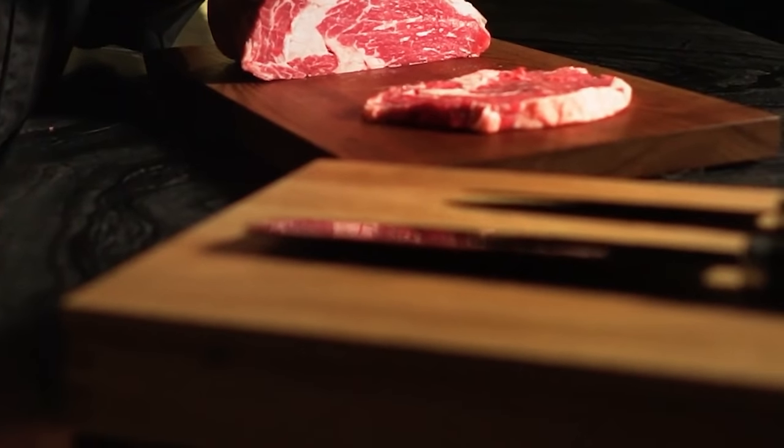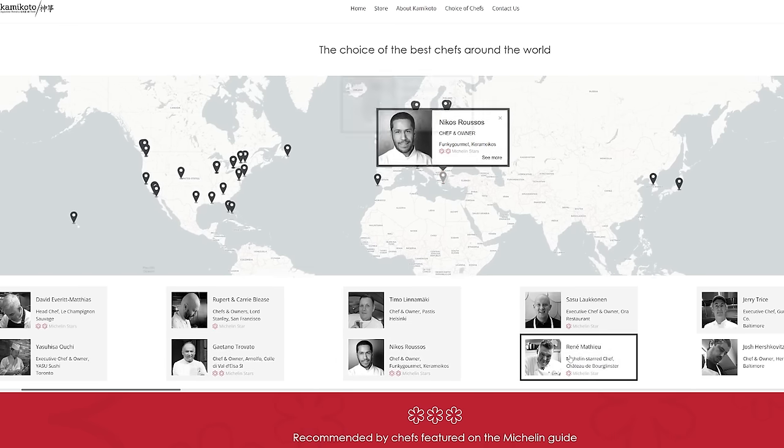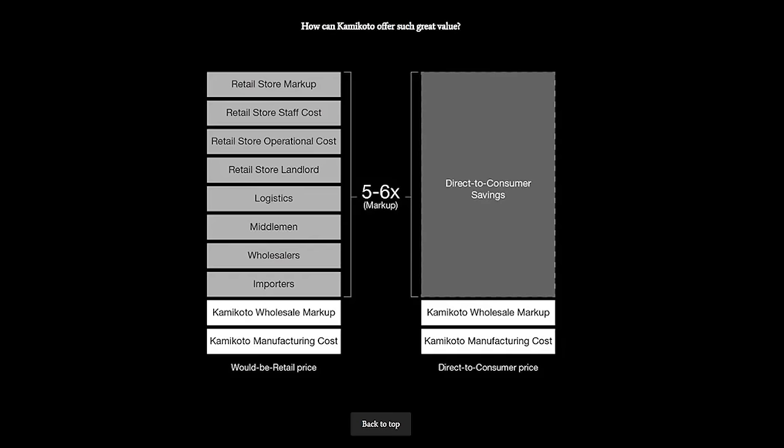They have a single bevel edge that can cut through meat like butter. The Kamikoto knives are so good they're even being used by Michelin star chefs. And they have great customer service and their goal is to make the customer happy and respond to any of their needs. Their knives remain affordable even though the quality is so great because they cut out the middle man and deliver the knife straight to you.